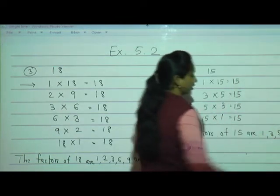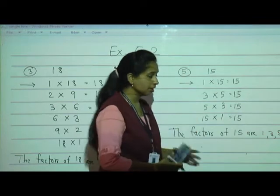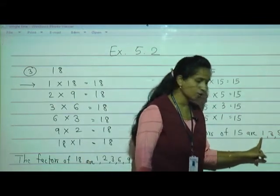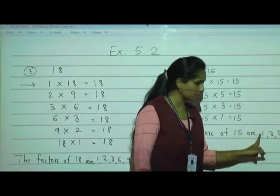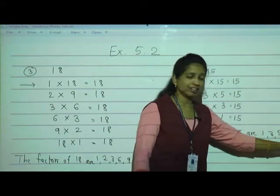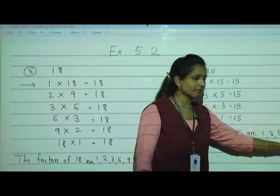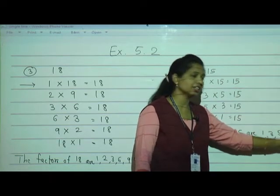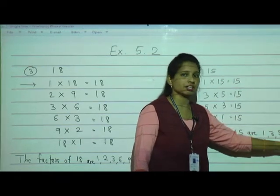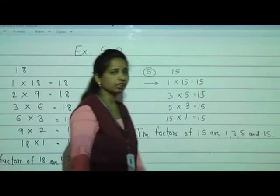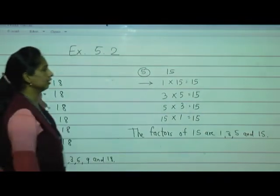Observe: whenever I write the factors, the lowest factor is 1 and the largest, biggest factor is the number itself — 15 in this case. That is the number itself.